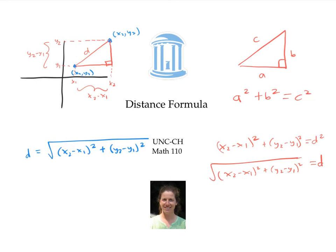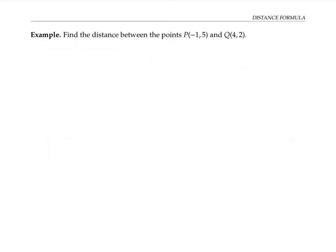Now let's use it in an example. Let's find the distance between the two points, negative one, five, and four, two. This notation just means that P is the point with coordinates negative one, five, and Q is the point with coordinates four, two.